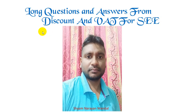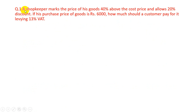Welcome to SAM classes. Today we are going to read long questions and answers from Discount and VAT for SEE. So watch carefully till the end. Question number 1: A shopkeeper marks the price of his goods 40% above the cost price and allows 20% discount. If his purchase price of goods is Rs.6000, how much should a customer pay for it including 13% VAT?